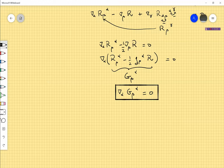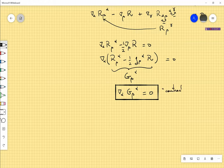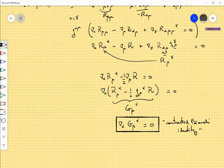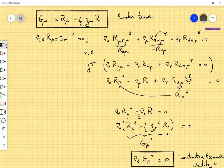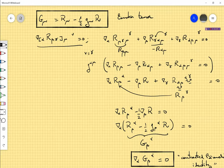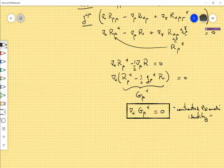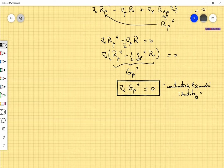And this Bianchi identity receives the name of contracted Bianchi identity. Because we obtained it from this original differential Bianchi identity by contracting several indices. One contraction without use of the metric, and another contraction with the use of the metric. This Bianchi identity plays a fundamental role in general relativity, as I have said many times. And as we will see very soon in the next lecture.